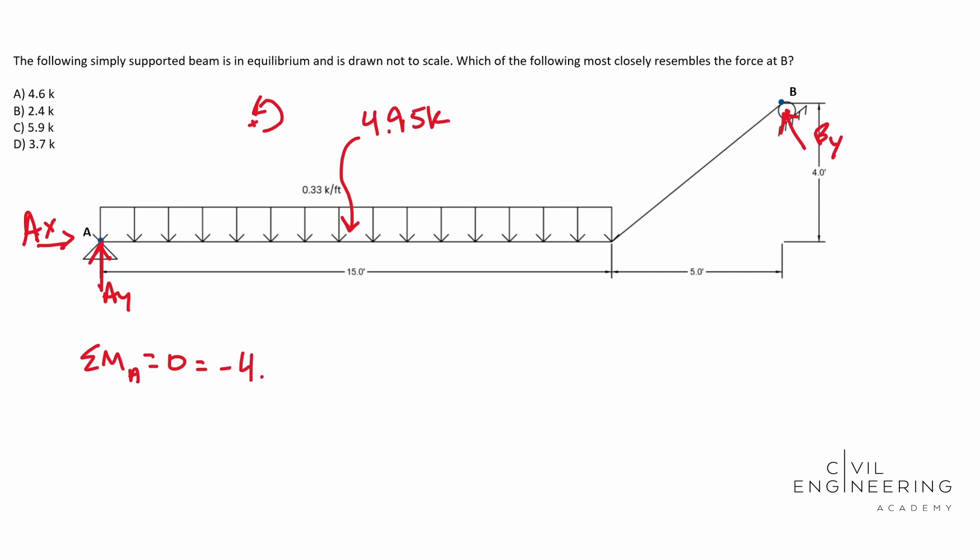We know that this force is going to be 4.95 kips and we need to multiply that by its perpendicular distance. That's going to be half of 15. So that's this way. There's your distance. So this is 7.5 feet. 7.5 feet is our perpendicular distance.